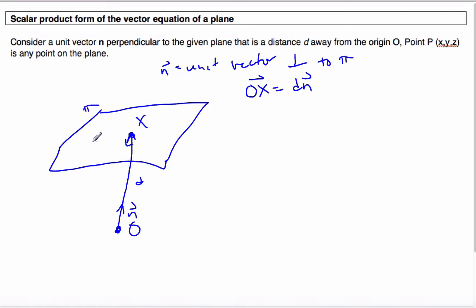I also can have a point P here, and P is any point on my plane. And I have here, this is OP, and I'll call it vector R. So OP is equal to vector R. And I also have the vector, I can have the vector PX.